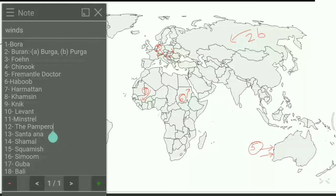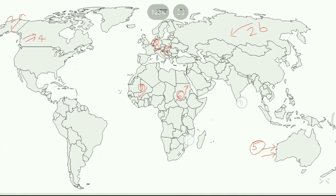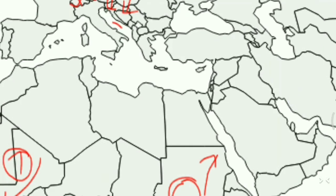Next is the Khamsin, which blows from the south in North Africa and the Arabian Peninsula. On the map it is shown here, and we write 8 for Khamsin.